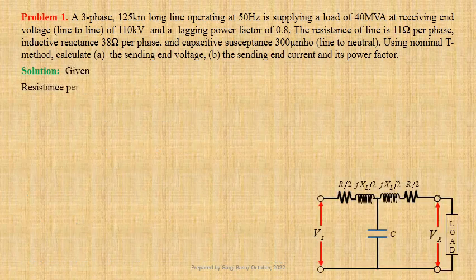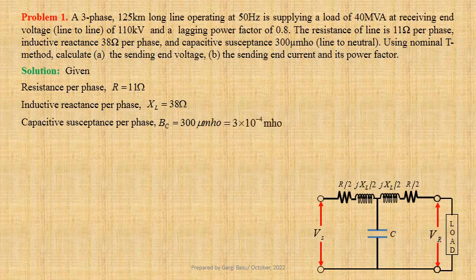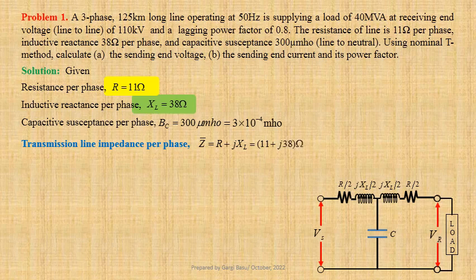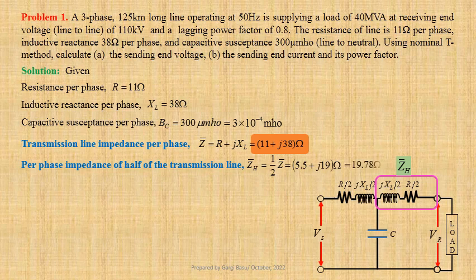Given resistance per phase R equals 11 ohm, inductive reactance per phase XL equals 38 ohm, and capacitive susceptance per phase BC equals 300 micromho, that is 3×10⁻⁴ mho. Transmission line impedance per phase Z equals R plus j×XL, that is 11 plus j38 ohm. Per phase impedance of half of the transmission line ZH equals Z/2, that is 5.5 plus j19 ohm, which may be written in polar form as 19.78 ohm at an angle 73.8557 degrees.